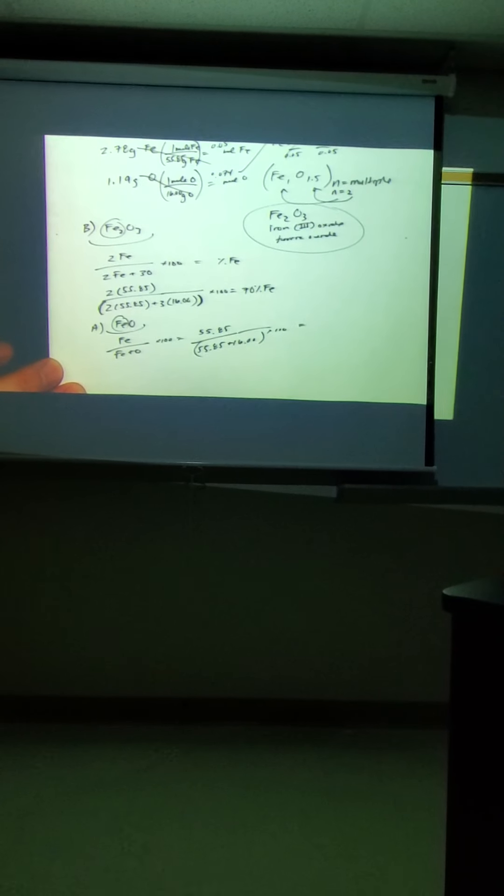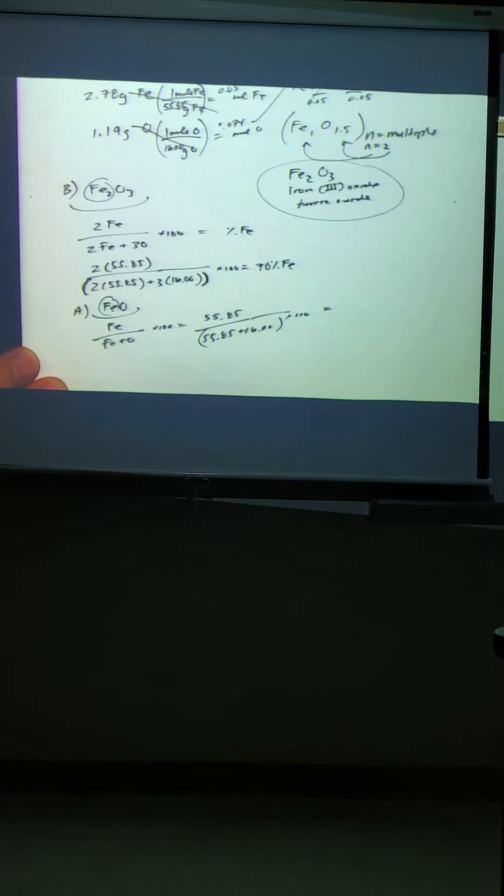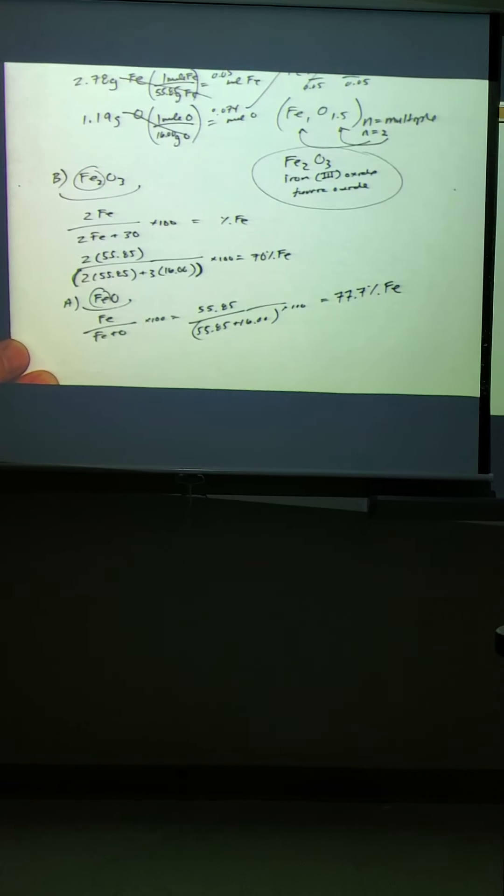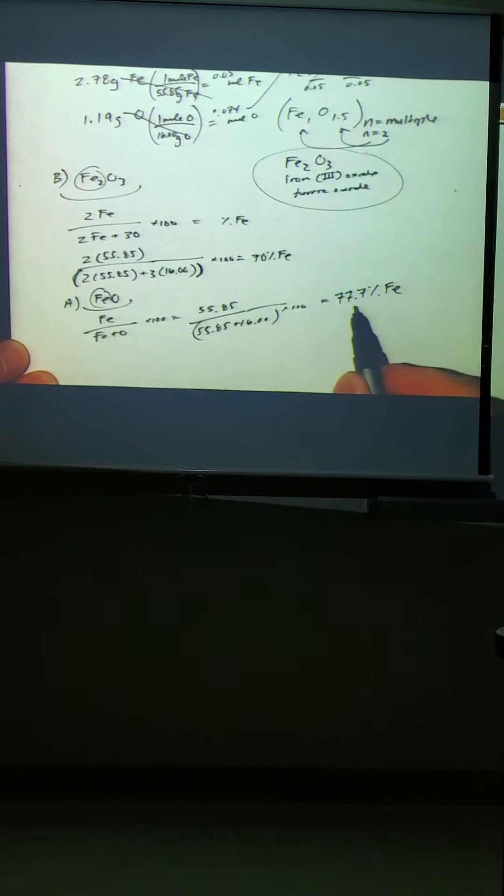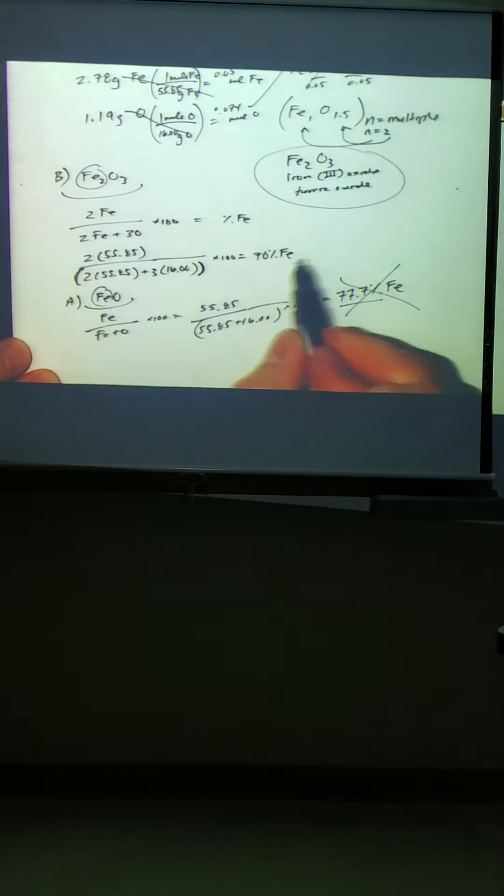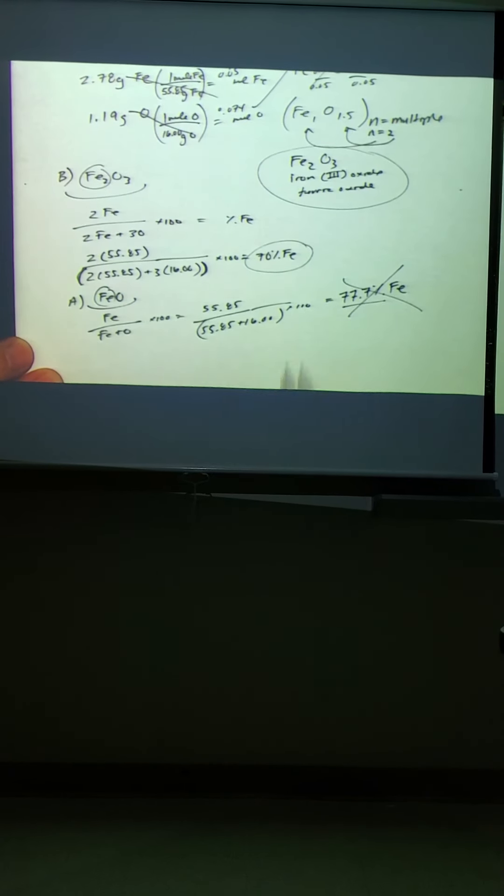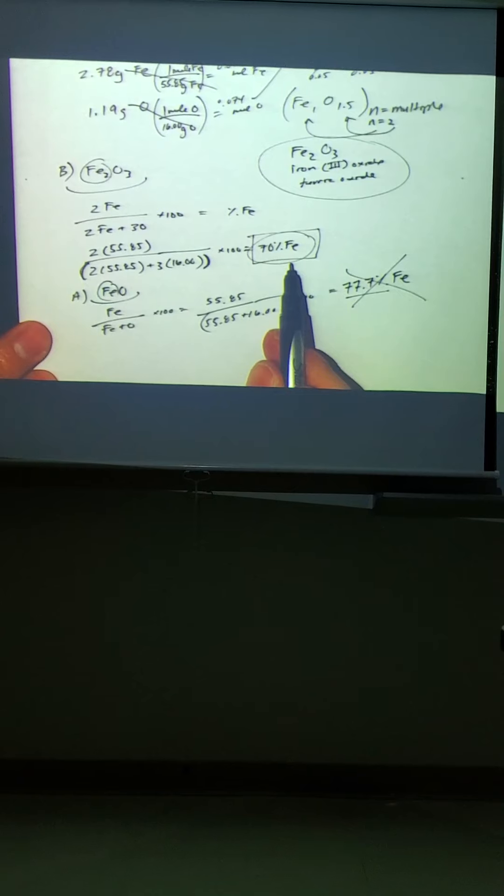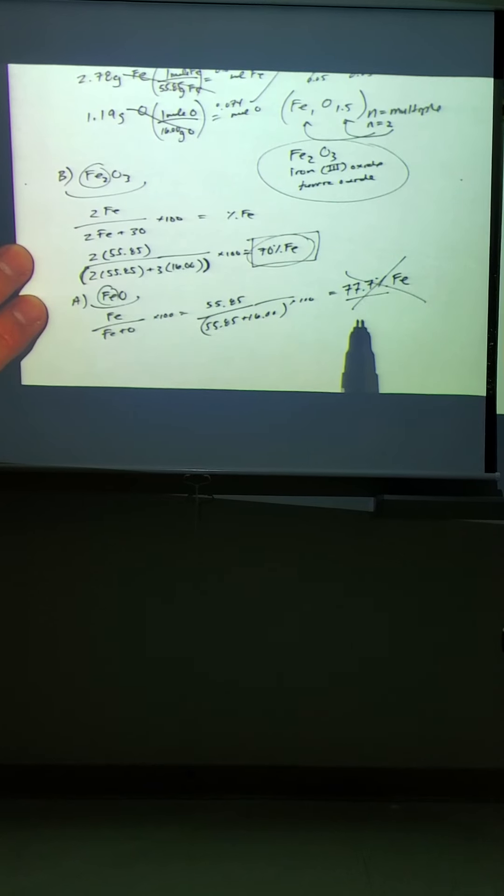So if the question says, who is 70% iron? Well, you go through A and find that it's 77.7% iron. So it's not the answer. You go through B and you find that it's a perfect match. You don't even have to go to C or D. You already know the answer because the question asked for 70% iron. We proved it by using law of definite composition, by using the percentages to match the percentages.